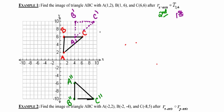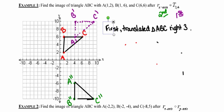That ghost triangle is just kind of my work that I'm showing in order to obtain the final product. Now if I wanted to describe the steps that I took in order to perform this composition, I might say first we translated triangle ABC right three units and up four units, or three units in the x-direction, four units in the y-direction.